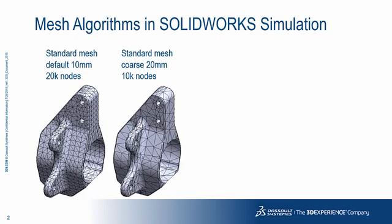In SOLIDWORKS Simulation, we always have the standard mesher. It generates a uniformly distributed mesh with some adjustments depending on the geometry.